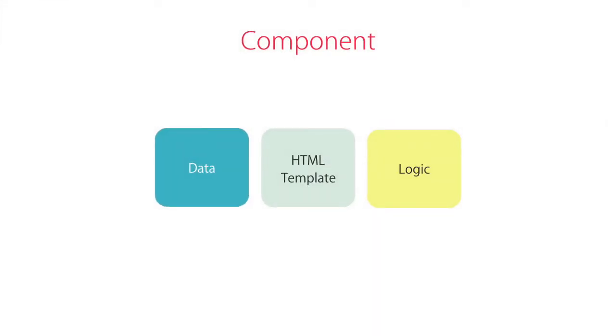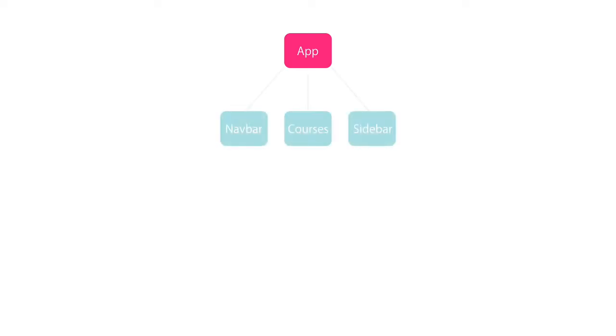So, once again, a component encapsulates the data, the HTML markup, and the logic for a view, which is an area of the screen that the user sees. Every application has at least one component, which we call the app component, or root component. A real-world Angular app is essentially a tree of components starting from the app component, or the root component.